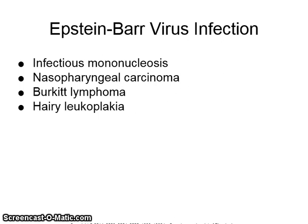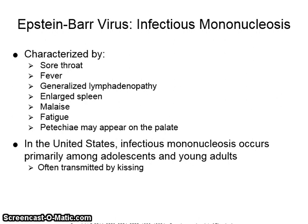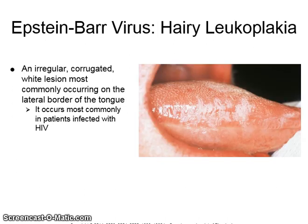The Epstein-Barr virus causes infectious mononucleosis, nasopharyngeal carcinoma, Burkitt's lymphoma, and hairy leukoplakia. Infectious mononucleosis is characterized by sore throat, fever, generalized lymphadenopathy, enlarged spleen, malaise, fatigue, and petechiae may appear on the palate. In the United States, it occurs primarily among adolescents and young adults and is often transmitted by kissing, so it is known as the kissing disease. Hairy leukoplakia is an irregular, corrugated white lesion most commonly occurring on the lateral border of the tongue, and occurs most commonly in patients infected with HIV.